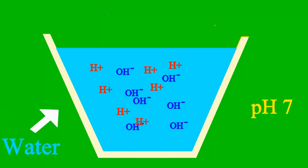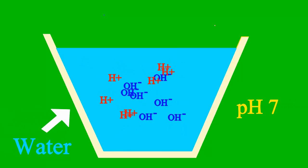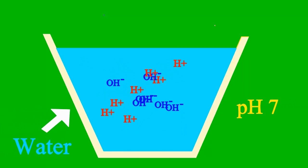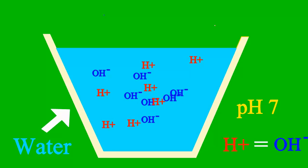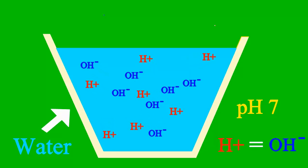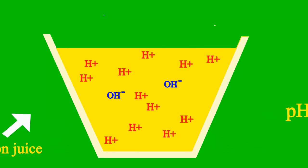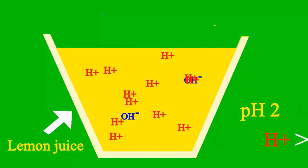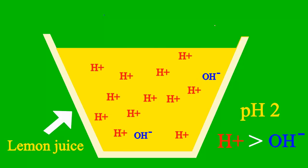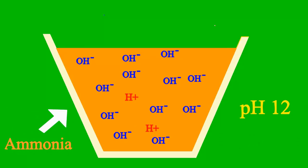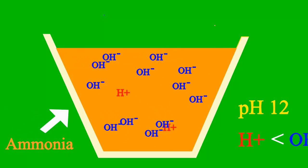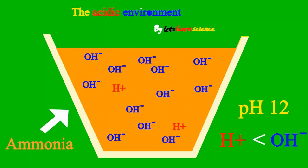When the pH is 7, the sample is neither an acid nor a base. Less than 7, it's an acid; more than 7, it's a base.